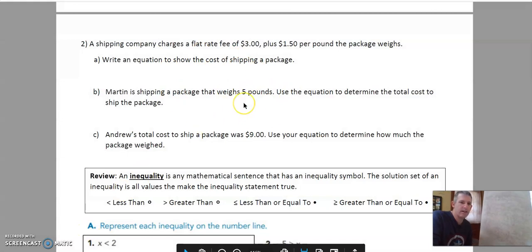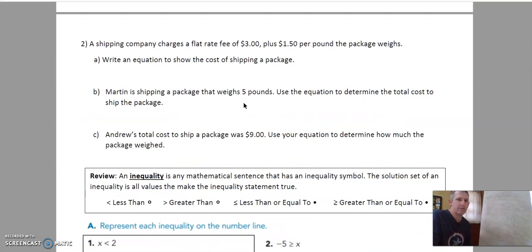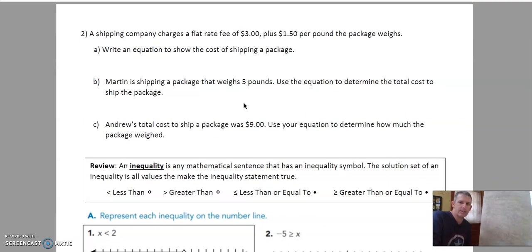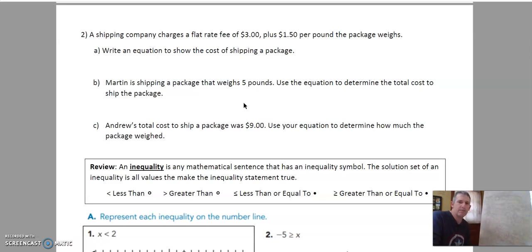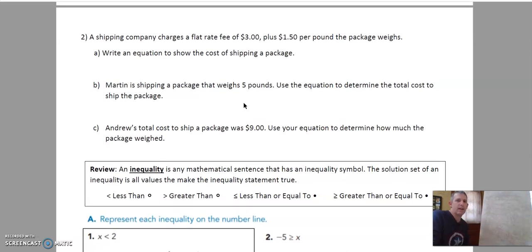It's kind of a continuation of yesterday just in case we ran into some problems with this second problem. It says a shipping company charges a flat fee of three dollars plus a dollar fifty per pound the package weighs. So write an equation to show the cost of shipping a package. Okay so let's go ahead and work on that. Markers here and we know that it's going to be three dollars regardless of how many pounds the package weighs.